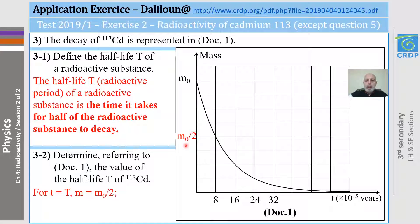Now, to be able to find the period or half-life t, let's try to find the point on the curve corresponding to this ordinate m0 over 2. This is the point. And once we have the point, let's try to find the abscissa corresponding to this point. The abscissa is 8. So, the time t is equal to 8 times 10 to the 15 years is the half-life t.